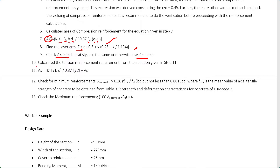From the tension reinforcement equation, you can calculate the main tension reinforcement area A. K' is 0.167, FCK is the characteristic compressive strength, B is beam width, D is effective depth, FYK is the characteristic yield strength of the reinforcement, Z is the lever arm from the previous calculation, and A' is the compression reinforcement area calculated in the previous step. With all these known, you can calculate the main tension reinforcement area.